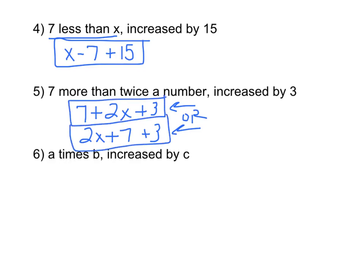The last one, number six. A times b increased by c. A times b, which is ab. Increased by c. Plus c. And that's it.